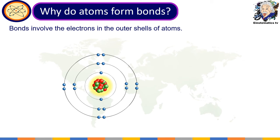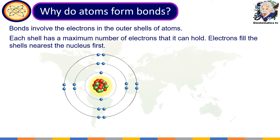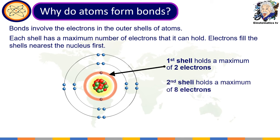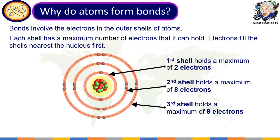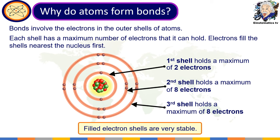You might be wondering why atoms need to bond. Bonds involve electrons in the outer shells of atoms. Each shell has a maximum number of electrons it can hold — the first shell holds a maximum of two electrons, the second shell holds a maximum of eight, and the third shell also holds a maximum of eight. The reason atoms form bonds is that filled electron shells are very stable. Once a shell has eight electrons, it is stable, so atoms tend to form bonds to reach stability.